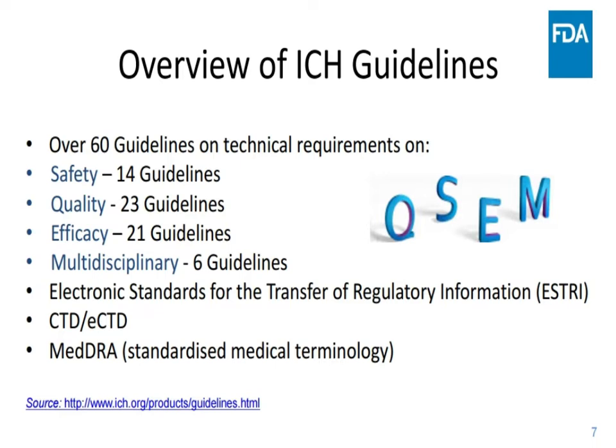There are over 60 guidelines on technical requirements on safety, which is mainly the animal studies and the preclinical studies — 14 there. Quality: 23 guidelines. Efficacy: 21 guidelines. And six multidisciplinary guidelines. There is also the electronic standards for the transfer of regulatory information, the common technical document or CTD, and the electronic common technical document, ECTD. And MedDRA, the Medical Dictionary for Regulatory Activities, which is standardized medical terminology. You can find all these at the link on the slide.